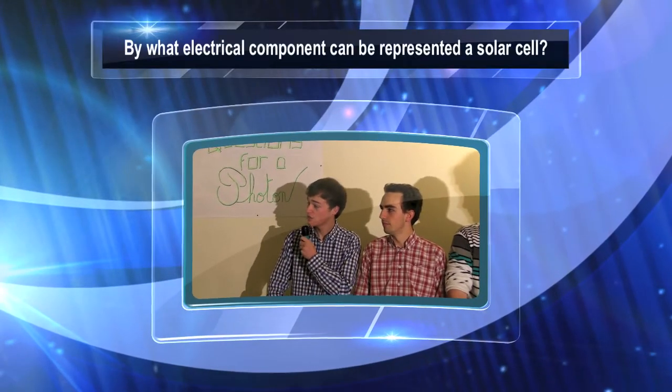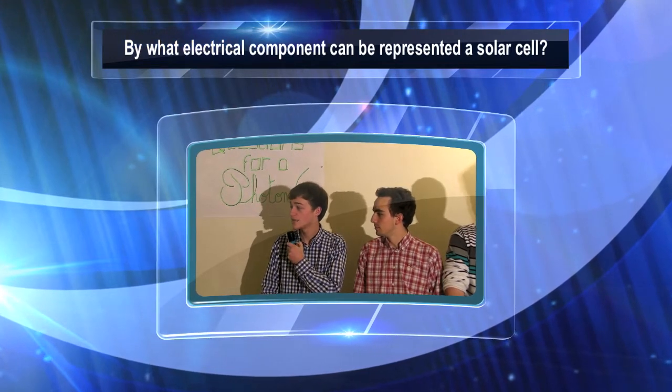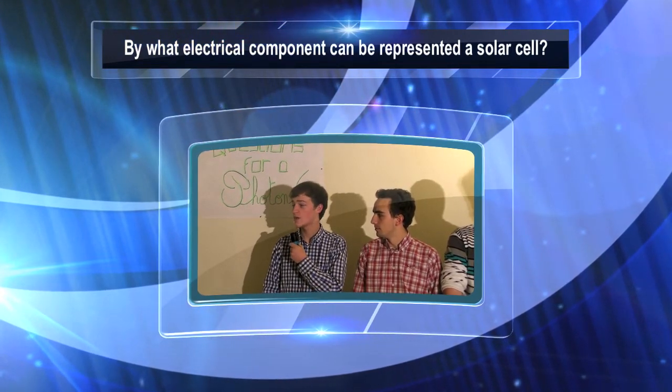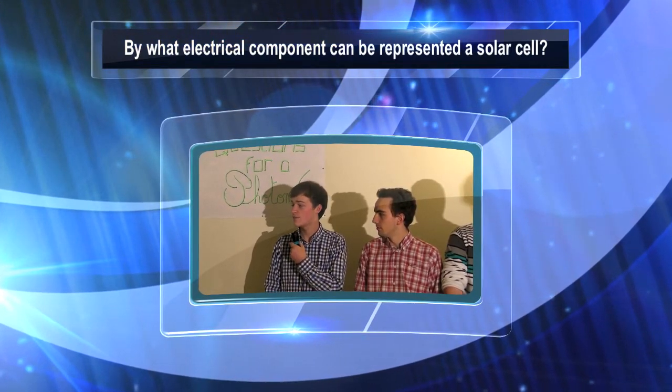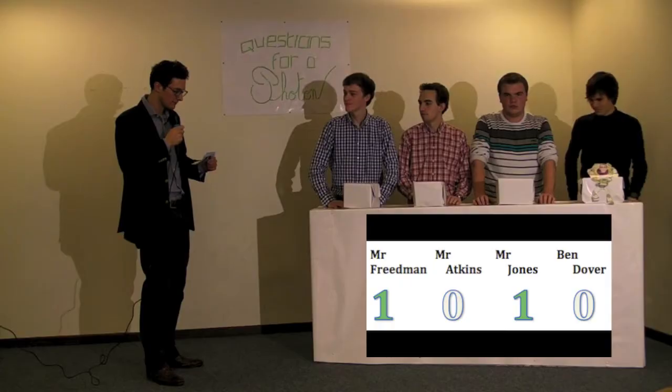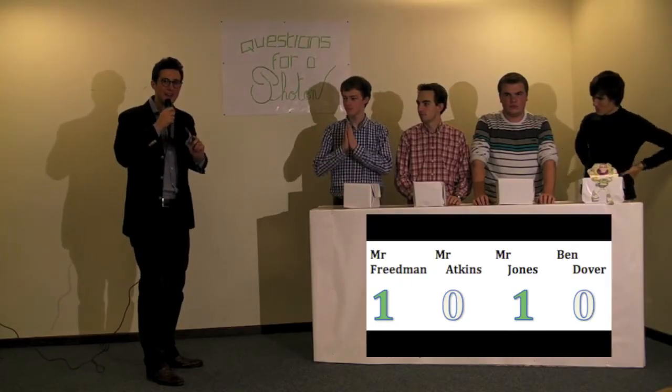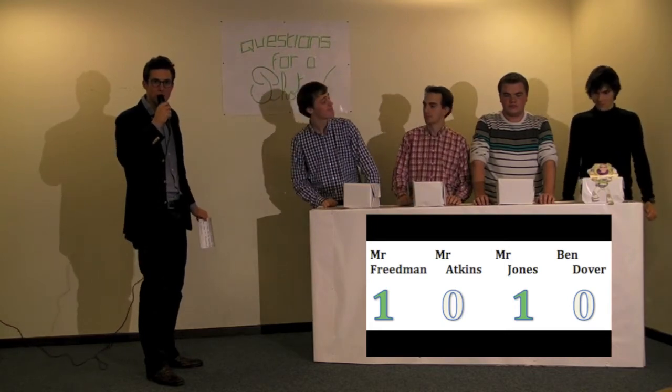By its p-n junction, a solar cell can be represented by a diode. And this diode switches into a current generator when the cell receives photons. And that's the right answer. I propose some enlightenment about this part.